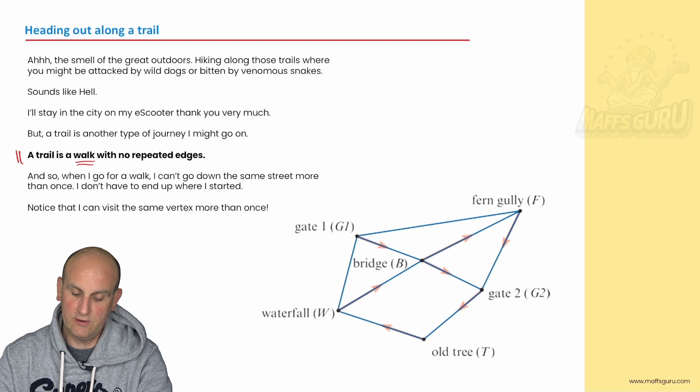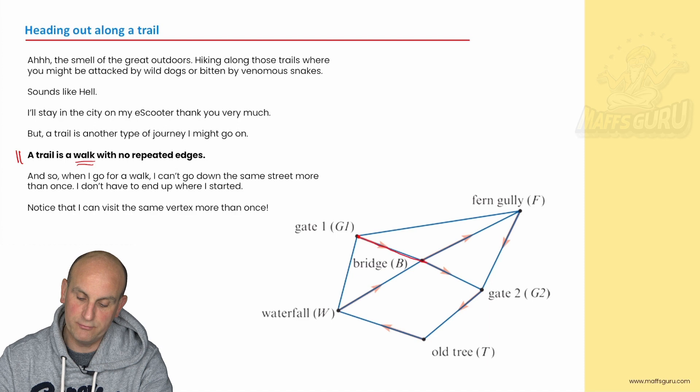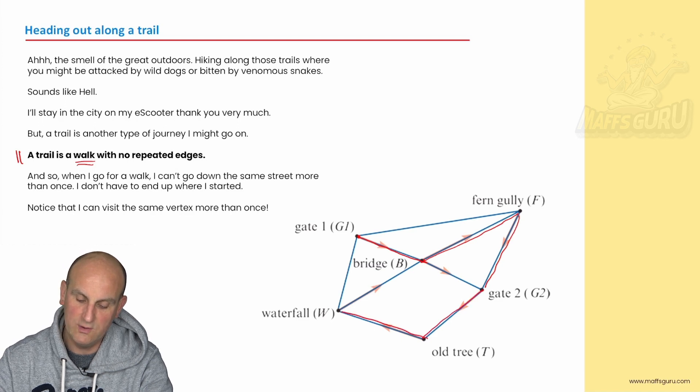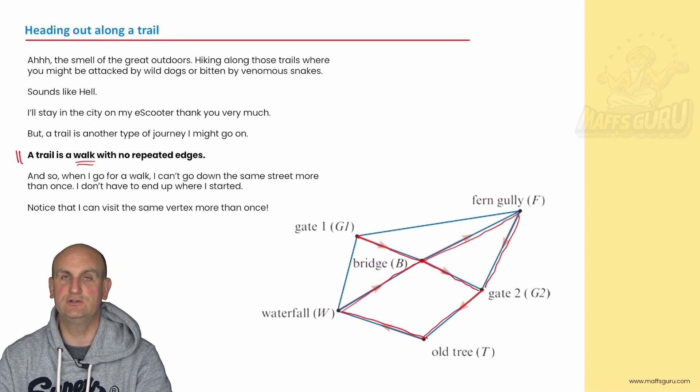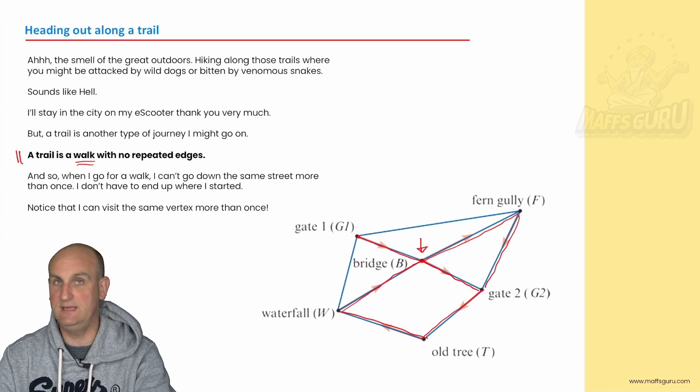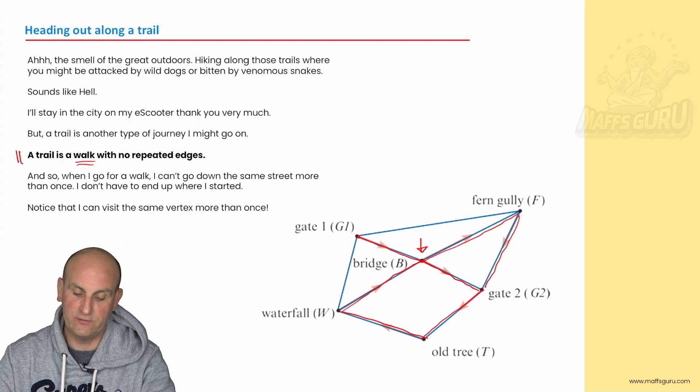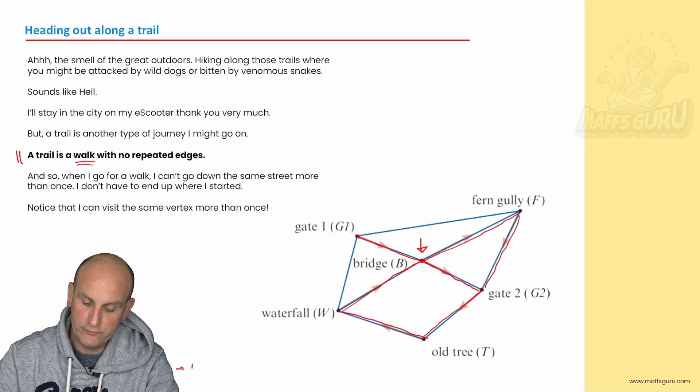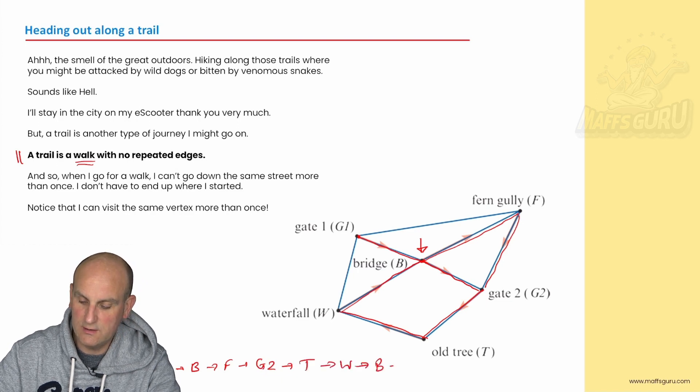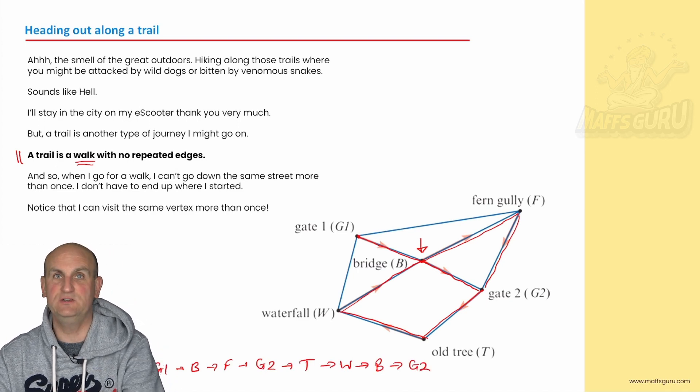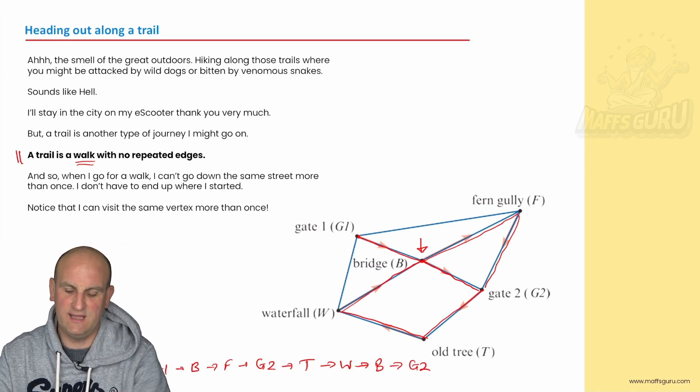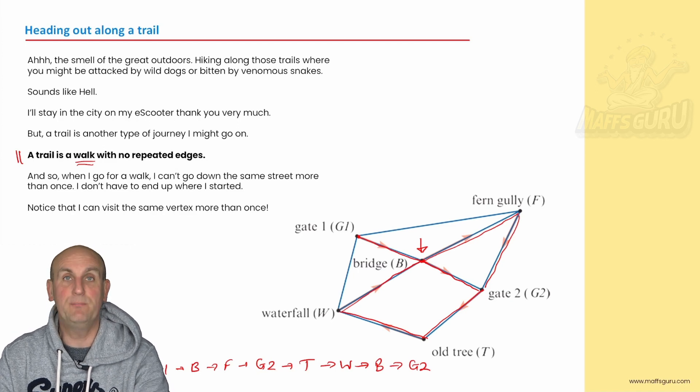But the point is I don't do the outdoors. I don't go on trails but it reminds me of the great outdoors. Anyway, a trail is a walk with no repeated edges. It is a walk, so I'm just heading out, I'm leaving one place and going somewhere else, but now I'm not allowed to repeat an edge. And notice the use of walk is part of the trail. So we build it up bit by bit. I'm going from gate one seemingly heading to the bridge, then to Fern Gully, down to gate two—I'm not repeating any edges at this moment in time. I'm going to the old tree, the waterfall, the bridge, and finishing off at G2. Now I repeated a vertex there. I'm allowed to repeat vertices just not edges when I go for a trail. So again if I was going to write this out using the letters it would have been G1 to B to F to G2 to T to the waterfall to the bridge and finishing off at G2. Notice here I'm not starting and ending my journey at the same place.